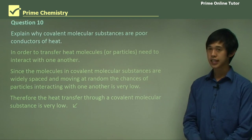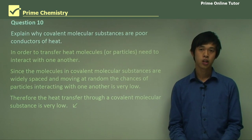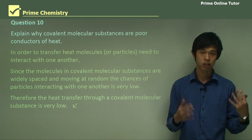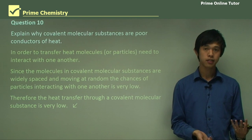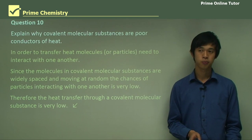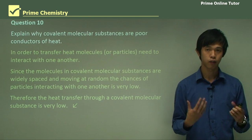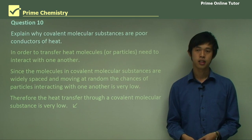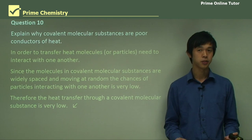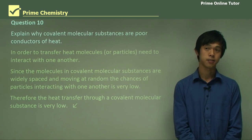That concludes today's lesson on the different bonding types. We looked at the four major bonding types and described each of their properties, and how we can identify them based on those properties. In the next lesson we'll look at some common covalent molecular substances, and I look forward to seeing you then.